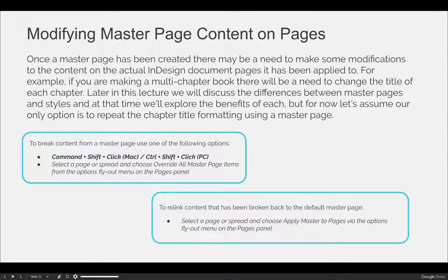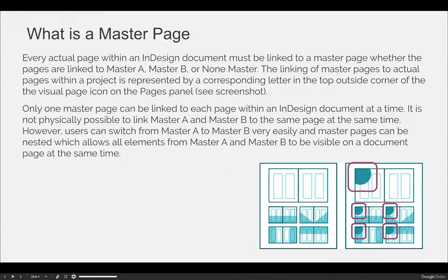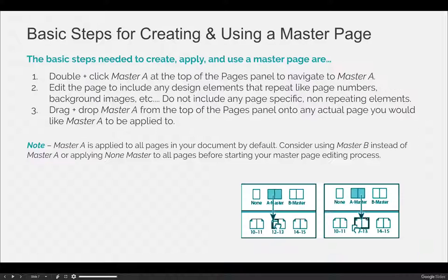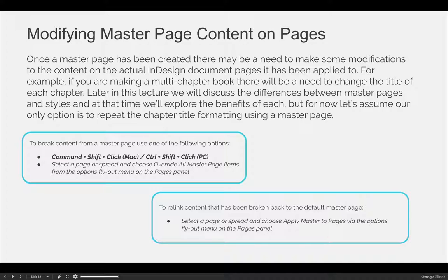Once a master page has been created, there may be a need to make some modifications to the content on the actual InDesign document pages it has been applied to. For example, you have a master A or a master B. You've added some sort of content to it — let's say it's the circle in our previous example. You've made the circle, it's on a master page, and you've linked it to the pages in your document. Sometimes you'll need to go back and modify that content either overall by editing the master page, but sometimes you need to edit just the content that's on a specific page.